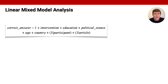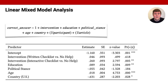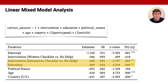We added fixed effects of a participant's education, political stance, age, and country. The linear mixed model analysis shows that the interactive checklist has a strong positive effect on whether participants provided correct article ratings. We also find moderate effects of education, age, and country.